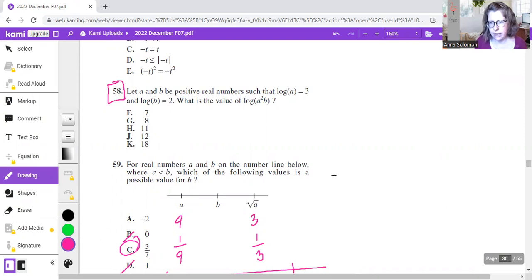This is the same concept, so you can see how not knowing that one concept hit us twice. So we have 58. Let a and b be positive real numbers, such that log a equals 3 and log b equals 2. What is the value of log a squared b? Well, let's just go ahead and do the work, so we start with log a equals 3. So there's that secret base 10 again, so we're going to do 10. Start at 10 to the third equals a. I'm just going to leave it that way, you'll see why in a minute.